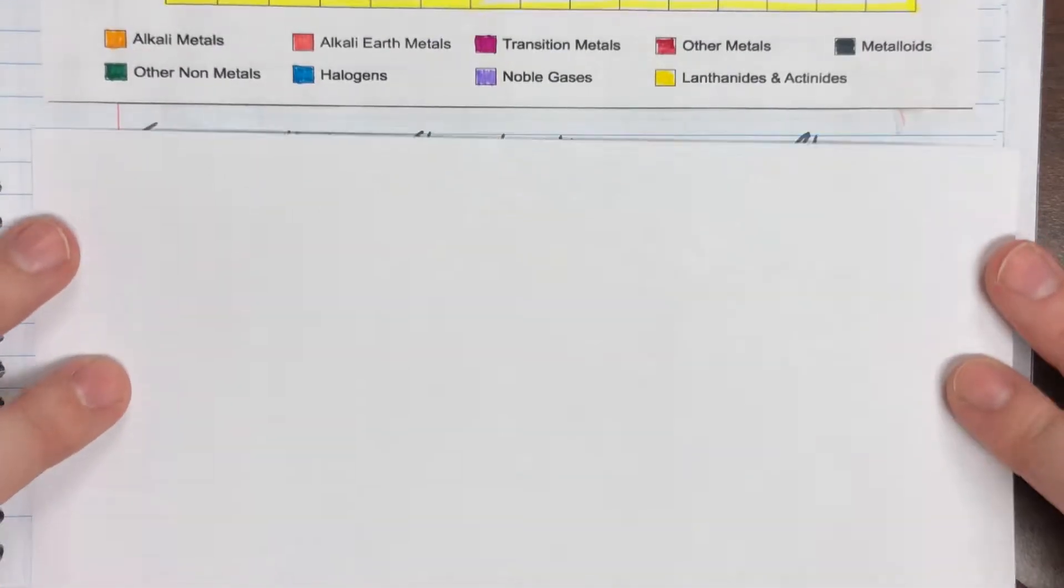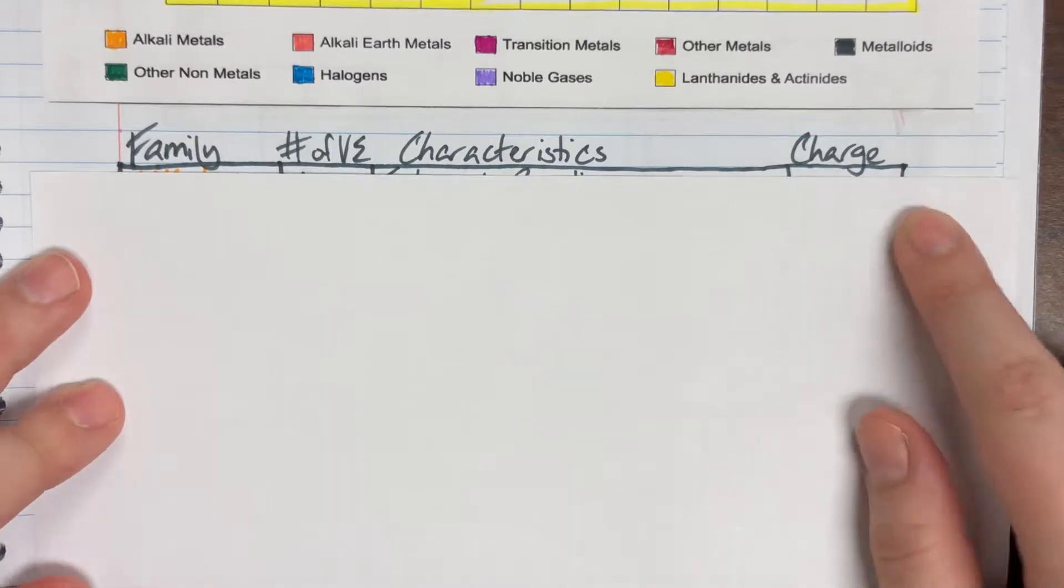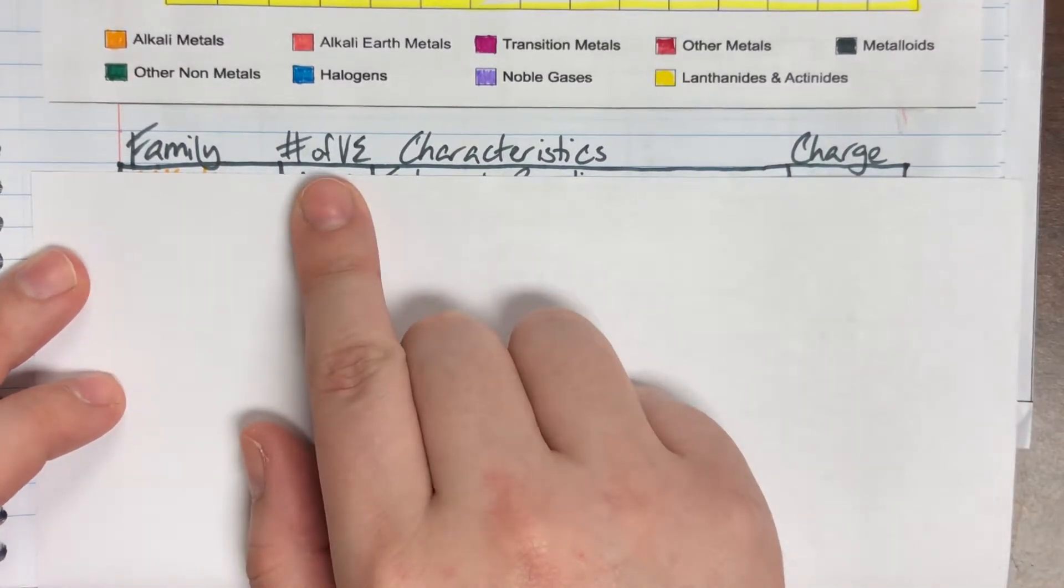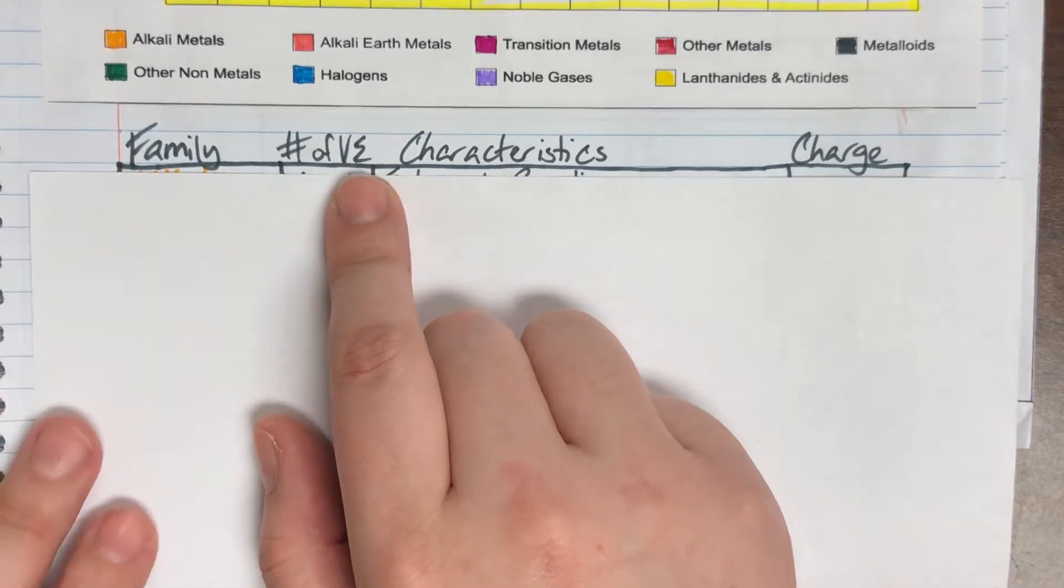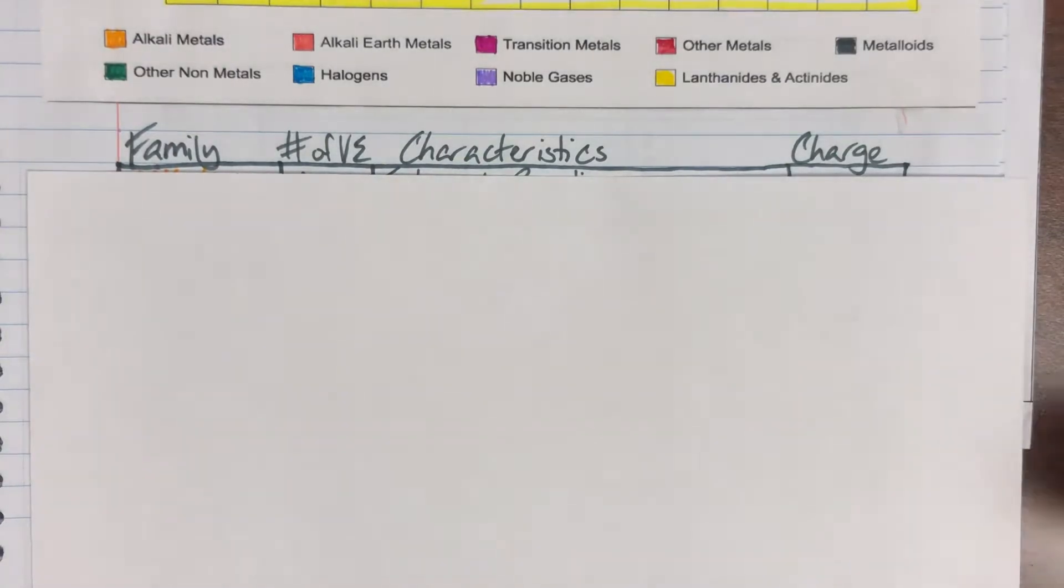We're going to be making a table with four columns: family, number of valence electrons (VE is shorthand for valence electrons), each family's characteristics, and each family's charge.